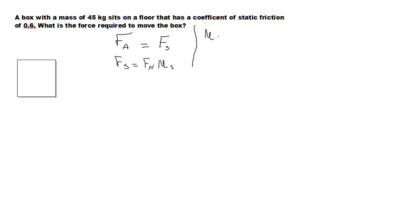We're given the coefficient of static friction, but we're not told what the normal force is. Well, we can figure out the normal force by Newton's second law. So take a look at our box, and here we have force going downwards.